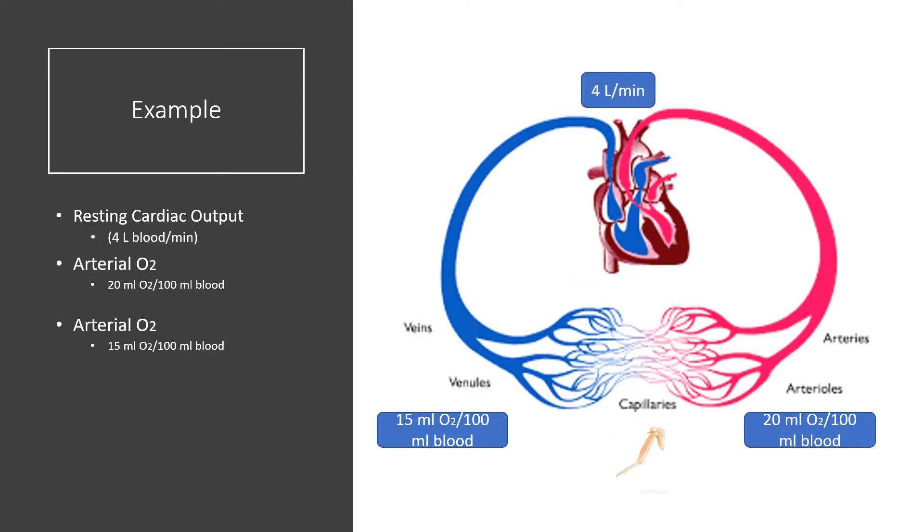Examples help reinforce these principles. Let's take a look at a real quick example of calculating VO2 using the Fick equation. Here we have a person who has a resting cardiac output of about four liters per minute.